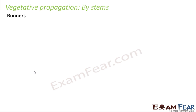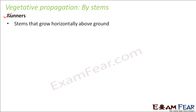Vegetative propagation by stems. In some plants, stems can be modified into many different types of structures, and each of these structures can produce new plants. One such modification is a runner. Normally we expect the stem to grow in the upward direction, but there are certain plants where stems grow horizontally above the ground.